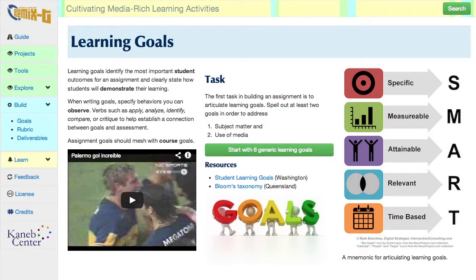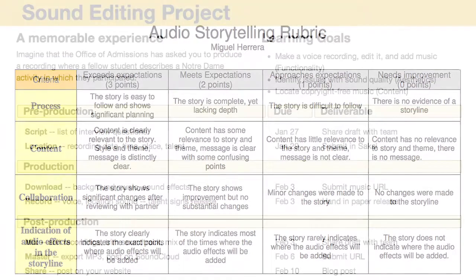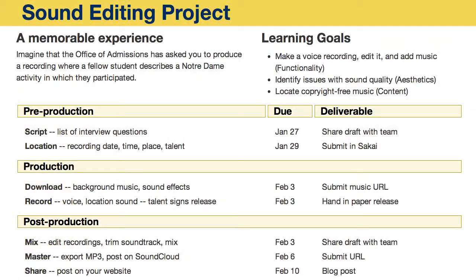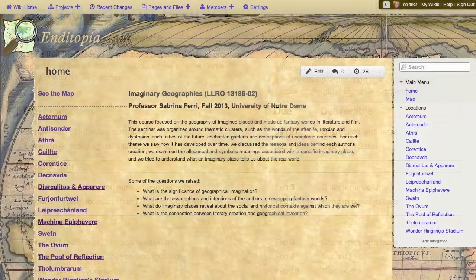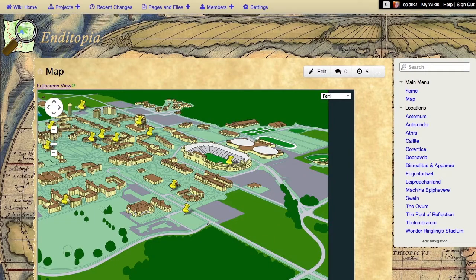The Build tab shows a three-stage process for creating new assignments, beginning with setting learning goals. To help evaluate students' work, the site encourages faculty members to create a rubric and provides examples. The third stage of the process is to create a list of steps or milestones that students will need to reach as they create their media-rich assignment.